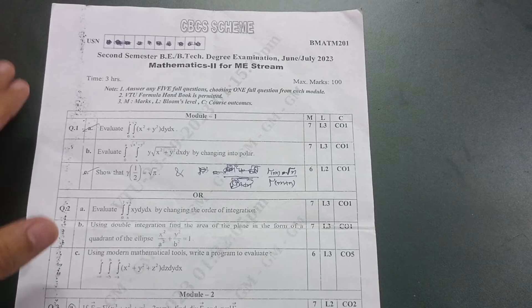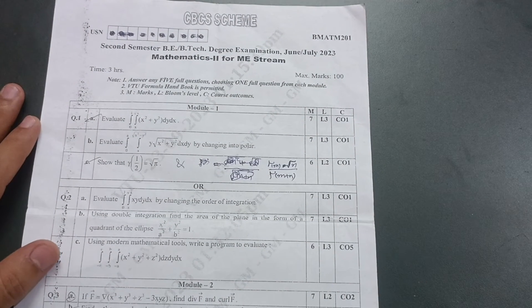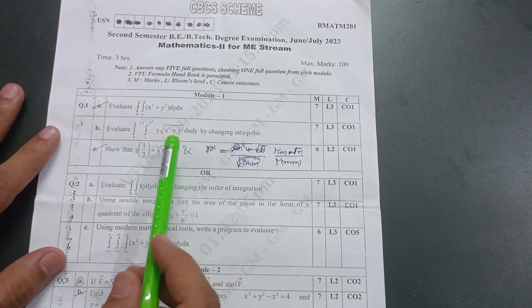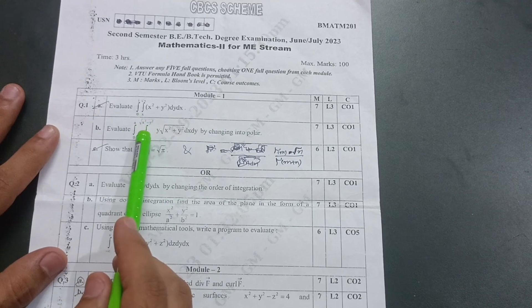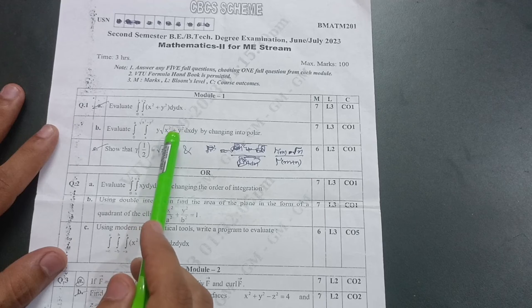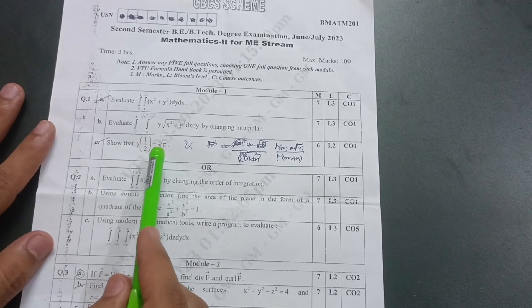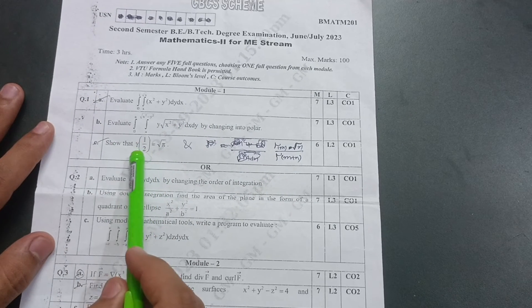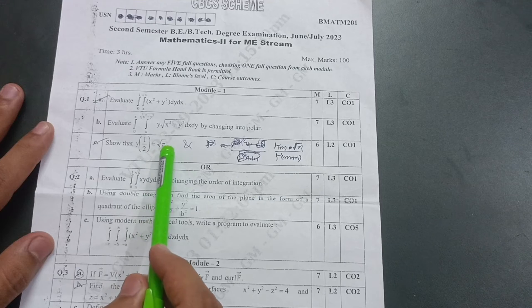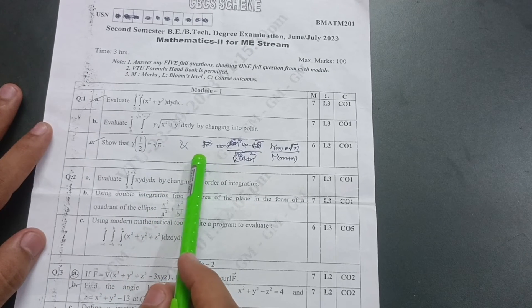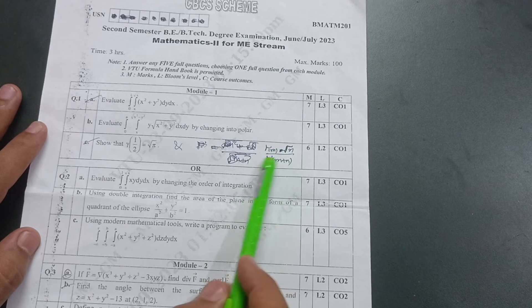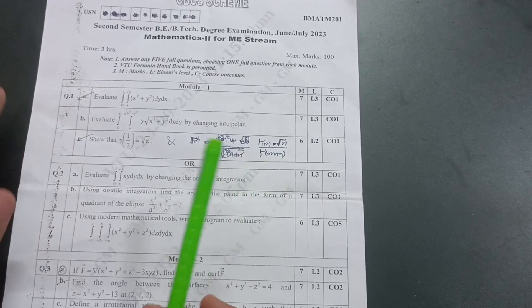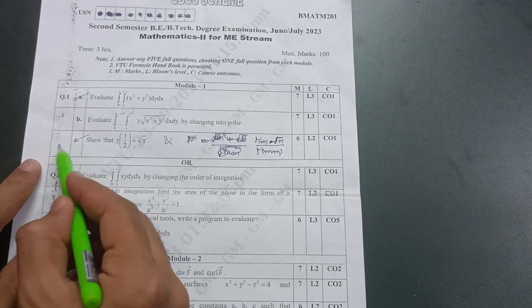I have taken the mechanical stream. First of all, in module 1, don't go through integration questions. Definitely, it is typical to cover in one night, so go through only this one derivation: show that gamma of 1/2 is equal to square root of pi, or sometimes they will give the beta-gamma relationship, that is gamma m into gamma n upon gamma m plus n. This is one definite question from module 1 which carries six marks, sometimes seven marks.